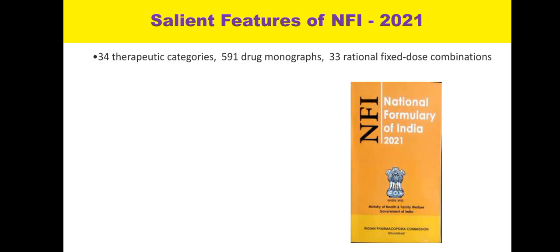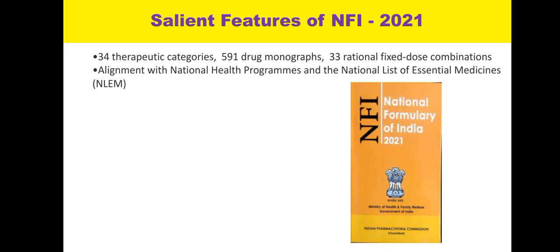The salient features of the NFI are: it contains 34 therapeutic categories of different drugs, 591 drug monographs, and all the details of 33 rational fixed-dose combinations. It has been specifically prepared in alignment with the national health program as well as the national list of essential medicines.